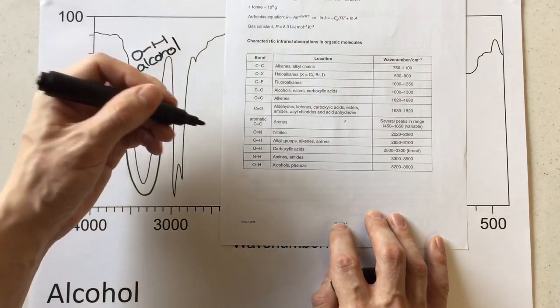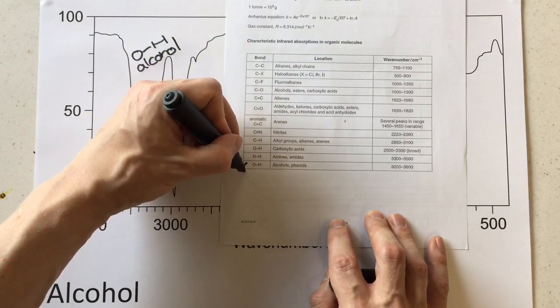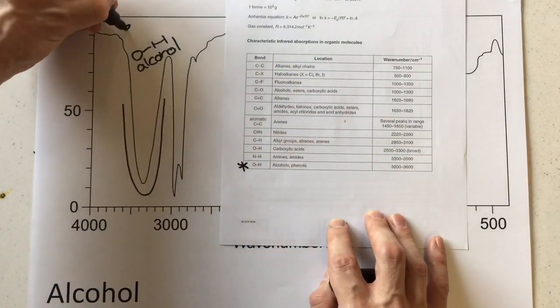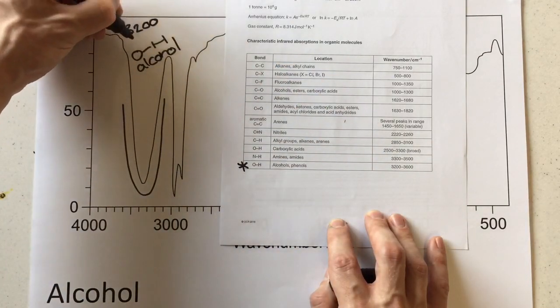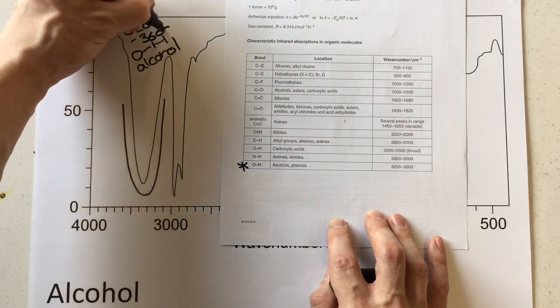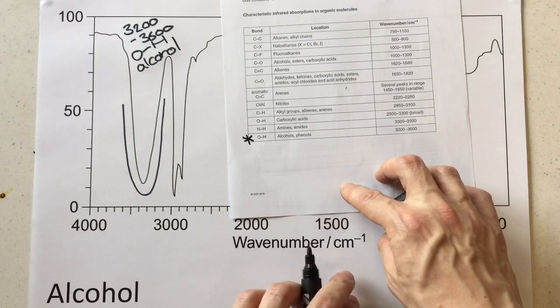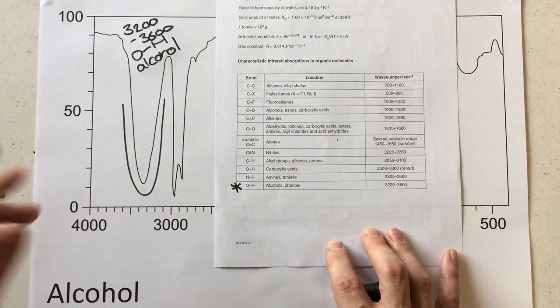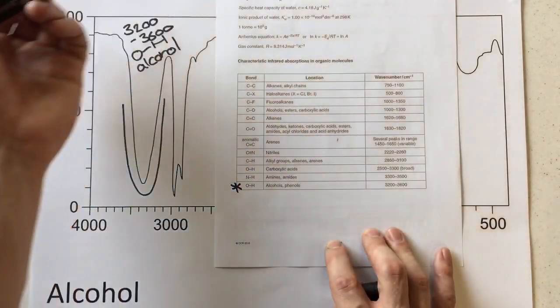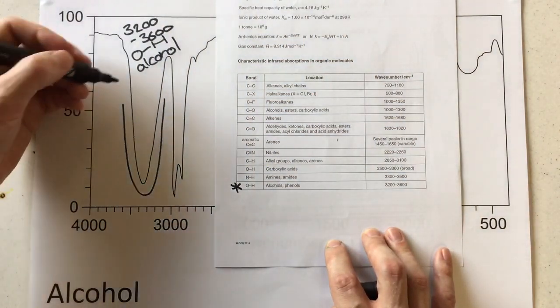Now if you look on the data sheet, at the very bottom, we're looking at 3200 to 3600 as our region for this. You can see it's in wavenumbers just at the bottom here. It's not too important because you'll always have that axis, and you'll always have them here on your data sheets. There isn't going to be a question about that.